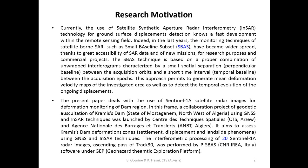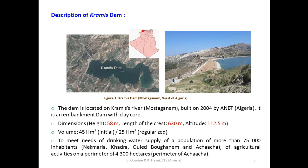The present work deals with the use of Sentinel-1A satellite radar images for deformation monitoring of the dam region. The dam region here is the Khabis Dam, which is located in the State of Mostaganem, north-west of Algeria. This dam was built in 2004 by the National Agency of Dams and Transfers. It is an embankment dam with a clay core, used for drinking water supply for populations and for irrigation and agriculture activities.